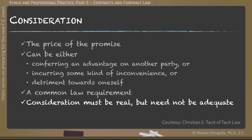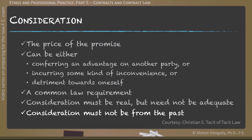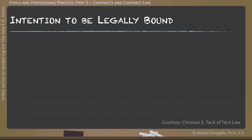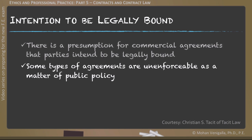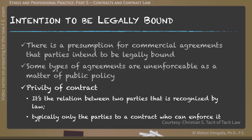The consideration can be either conferring an advantage on another party or incurring some kind of inconvenience or detriment towards oneself. It is a common law requirement that consideration be in place in the contract. This consideration must be real but need not be adequate, and it must not be from the past. Whenever there is a contract in place, there is a presumption that the parties to the contract intend to be legally bound. Some types of agreements are unenforceable as a matter of public policy, and if the contract is in violation of the law, it cannot be enforced. It is typically only the parties to a contract who can enforce it.